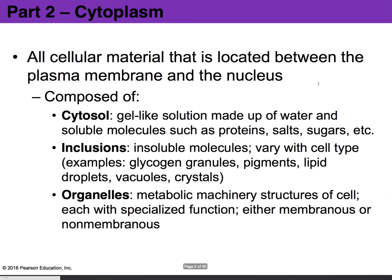Moving forward with the last part: in the previous two parts, we primarily spoke about the plasma membrane, the cell wall, what it's made up of, and how things move in and out of the cell. Now we're going to get past the plasma membrane and look at what we find after it — the nucleus and the cytoplasm. All the cellular material located between the plasma membrane and the nucleus is called the cytoplasm.